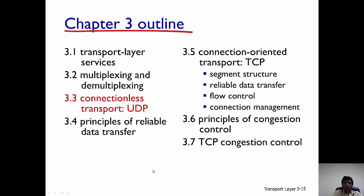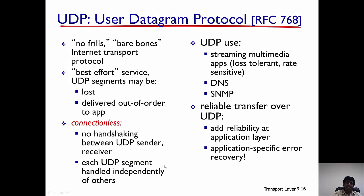In this lecture we're going to talk about UDP. UDP is a connectionless transport protocol — a no-frills, bare-bones approach and an internet transport protocol. It's a best-effort service, so UDP datagrams could get lost or be delivered to the application out of order. It's connectionless, meaning there is no handshaking between the sender and receiver — no messages are exchanged before UDP segments are sent. The sender just decides to send whenever it wants to.